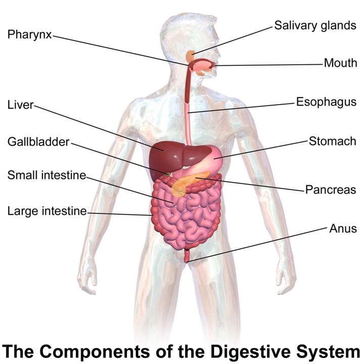Digestion is a form of catabolism that is often divided into two processes based on how food is broken down: mechanical and chemical digestion. The term mechanical digestion refers to the physical breakdown of large pieces of food into smaller pieces which can subsequently be accessed by digestive enzymes. In chemical digestion, enzymes break down food into the small molecules the body can use.